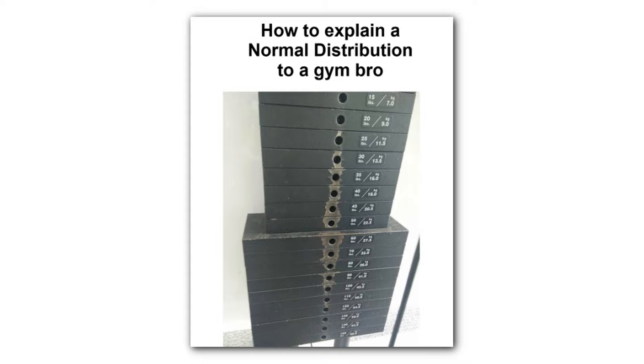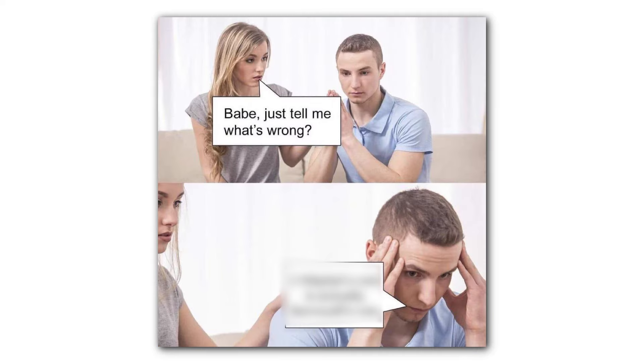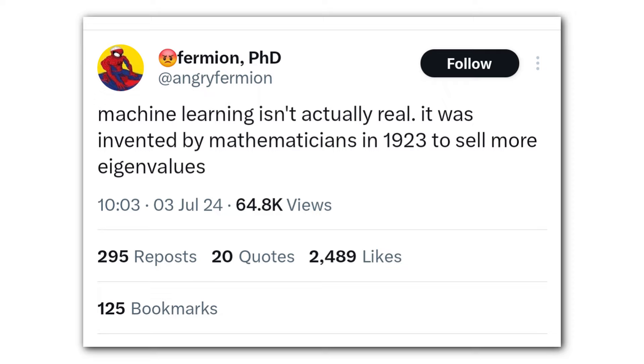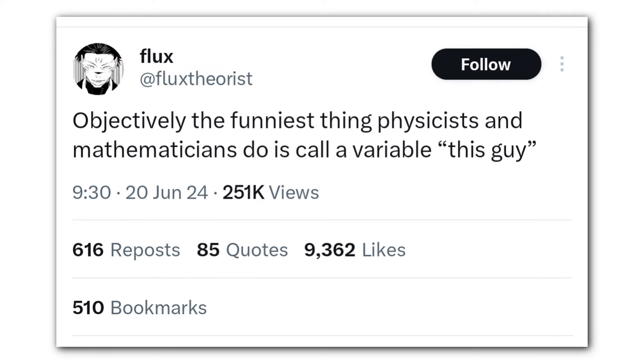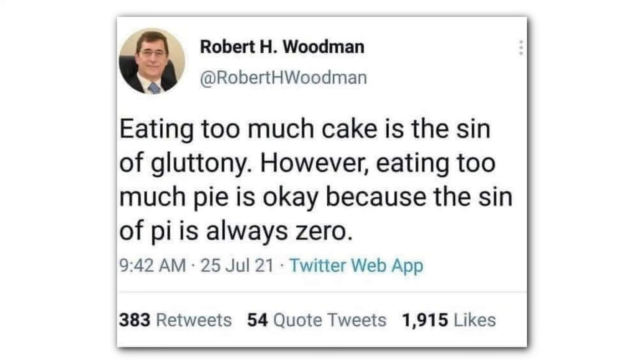How to explain a normal distribution to a gym bro? Degenjoyers. Radberries. Gradgraders. Babe, just tell me what's wrong. L'Hopital's rule is actually Bernoulli's rule. Infinity is the biggest number. No, infinity isn't a number. Infinity is the biggest number. Machine learning isn't actually real. It was invented by mathematicians in 1923 to sell more eigenvalues. Objectively, the funniest thing physicists and mathematicians do is call a variable this guy. Analysts. Numerists. Reducing PDEs to ODEs. Eating too much cake is the sin of gluttony. However, eating too much pie is okay because the sin of pie is always zero.